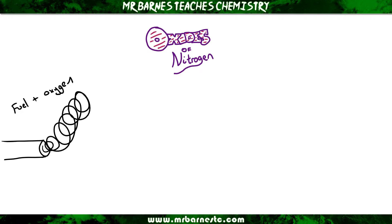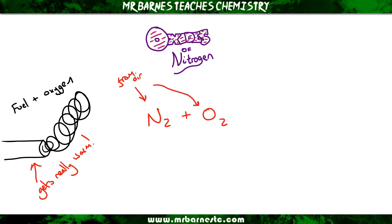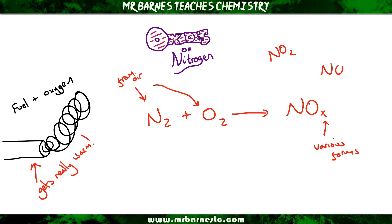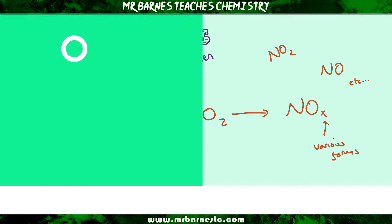However, there is a side effect. The exhaust can get really, really warm, and when it does, nitrogen, N2, which makes up 78% of our air, can react with the oxygen and when it does, it can form a nitrous oxide. There are various forms of nitrous oxides — we've got NO2, NO, and so on. I'm just going to put an X to show that the number of oxygens could be anything.